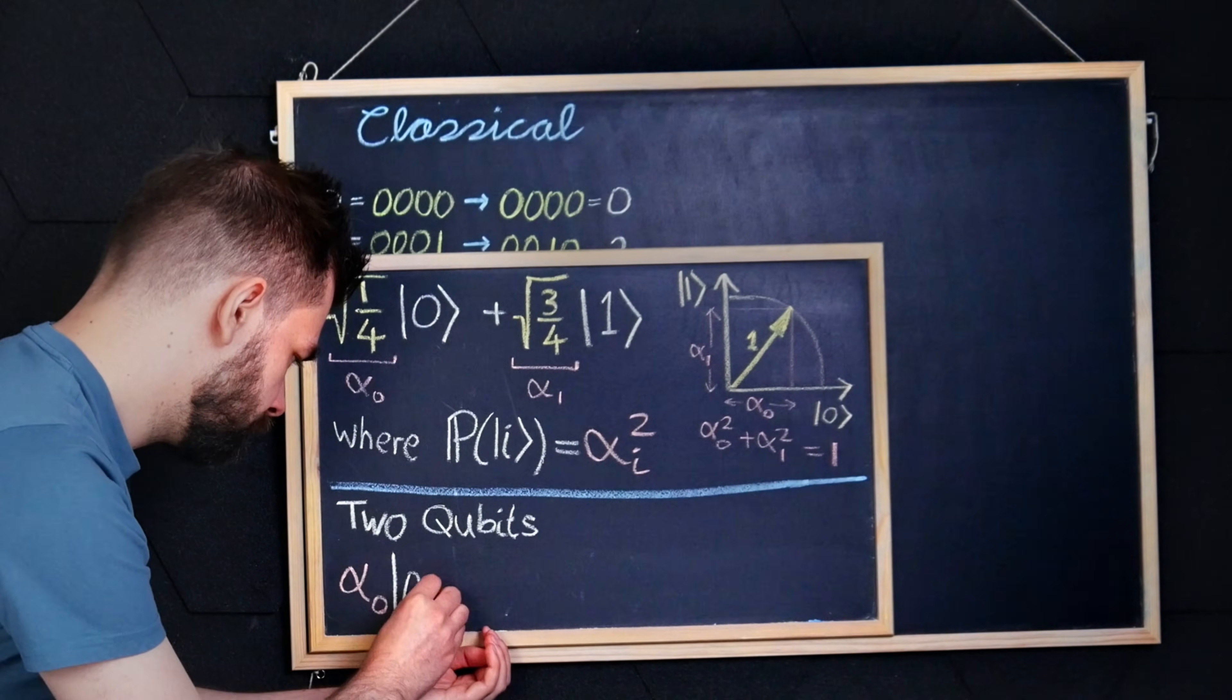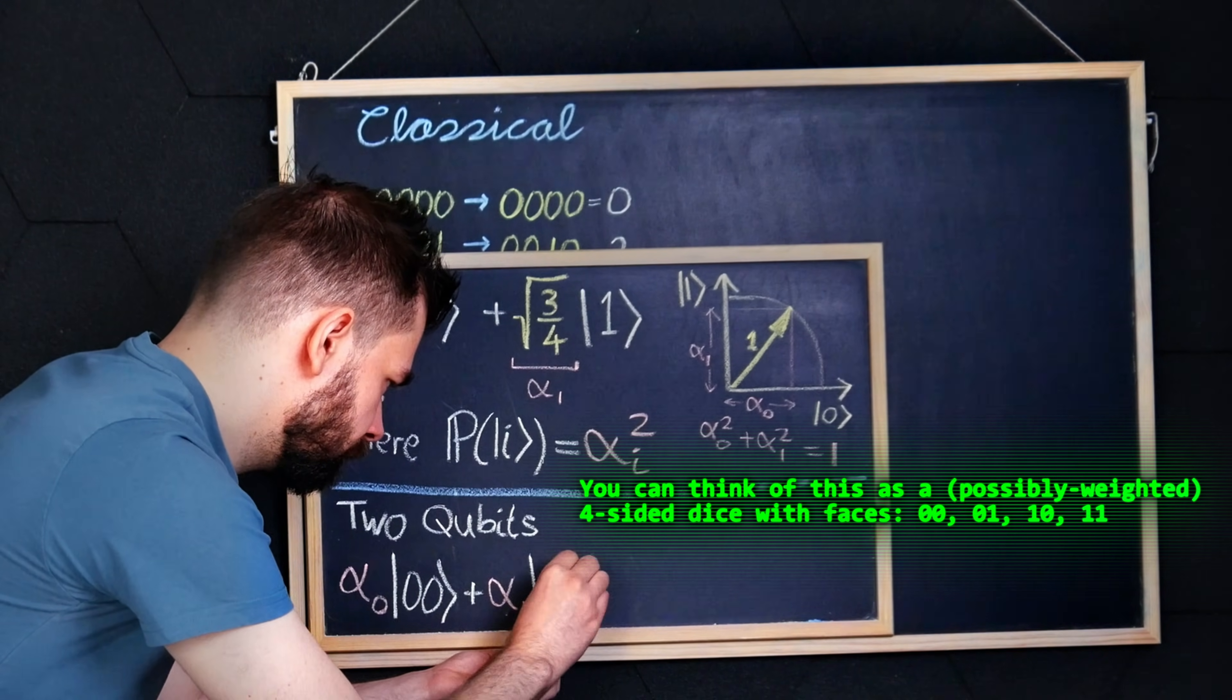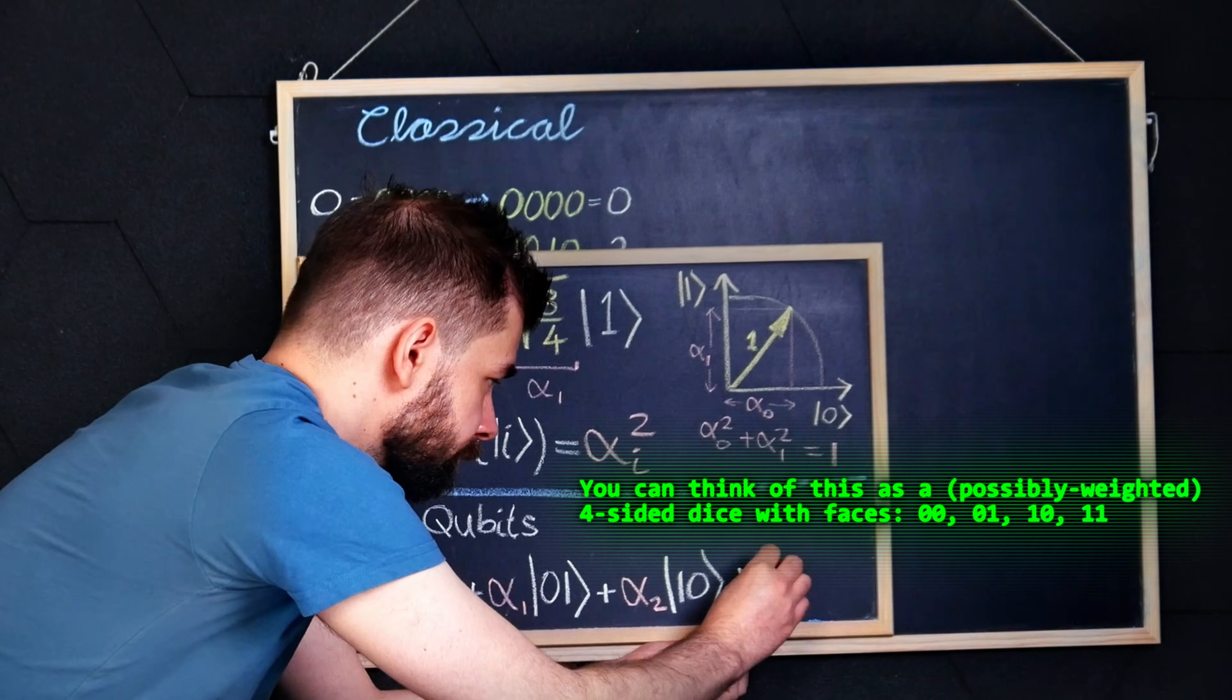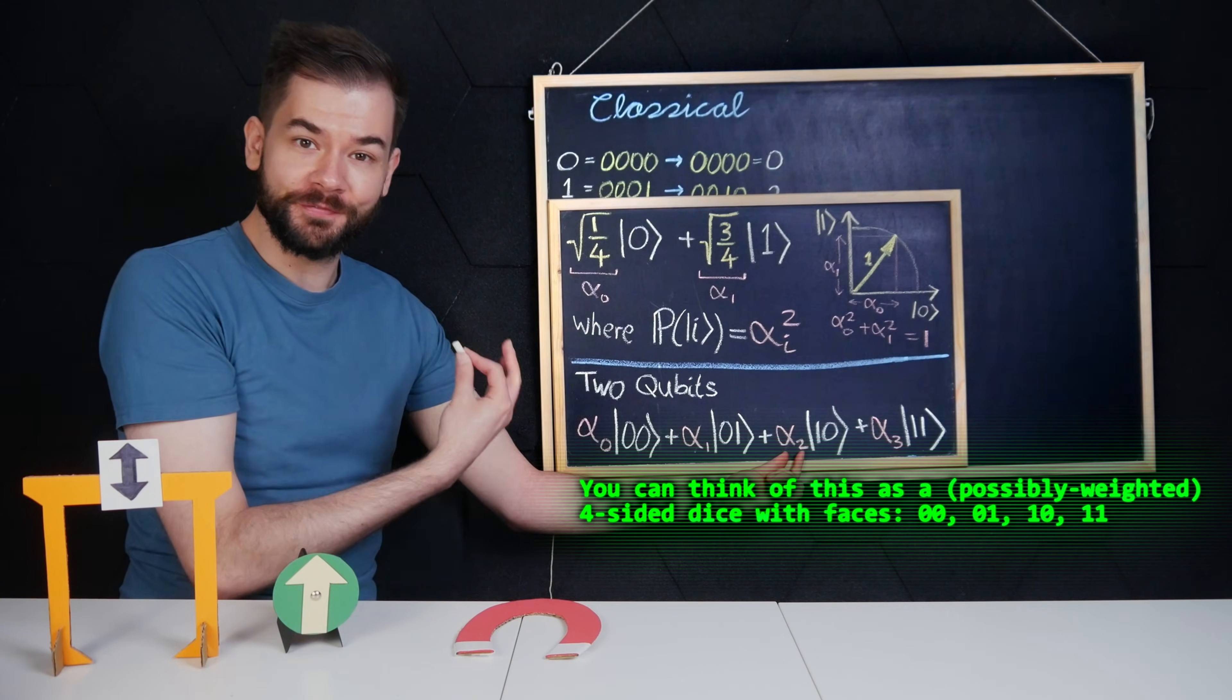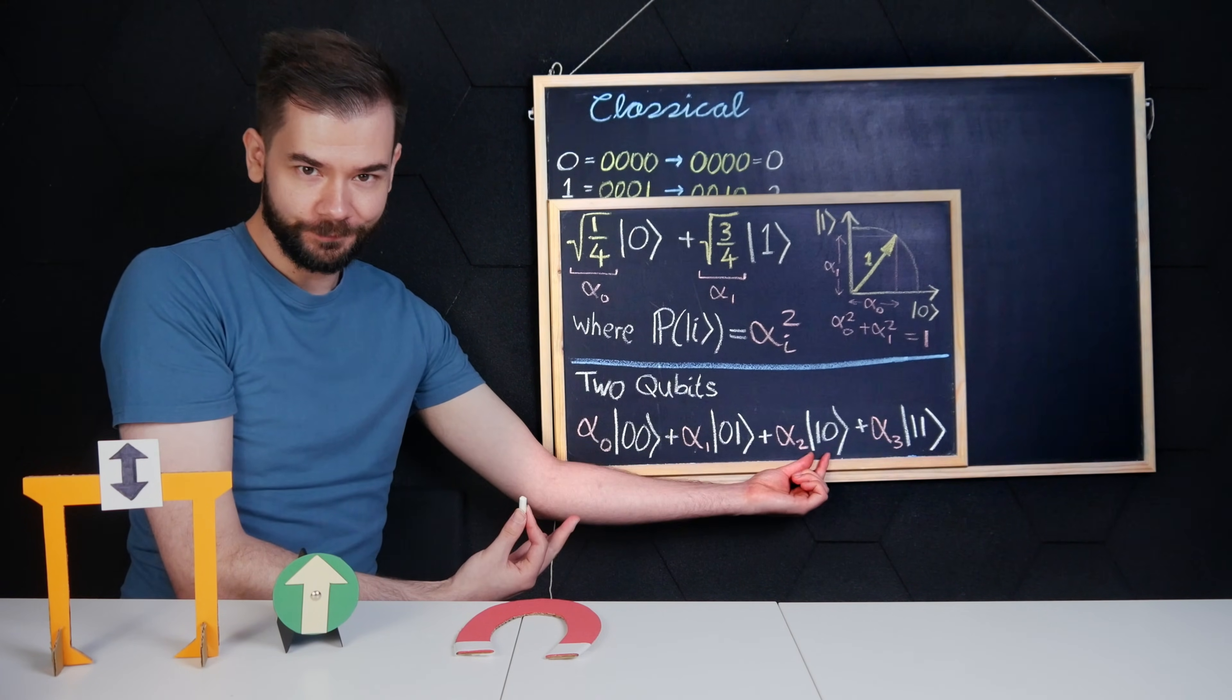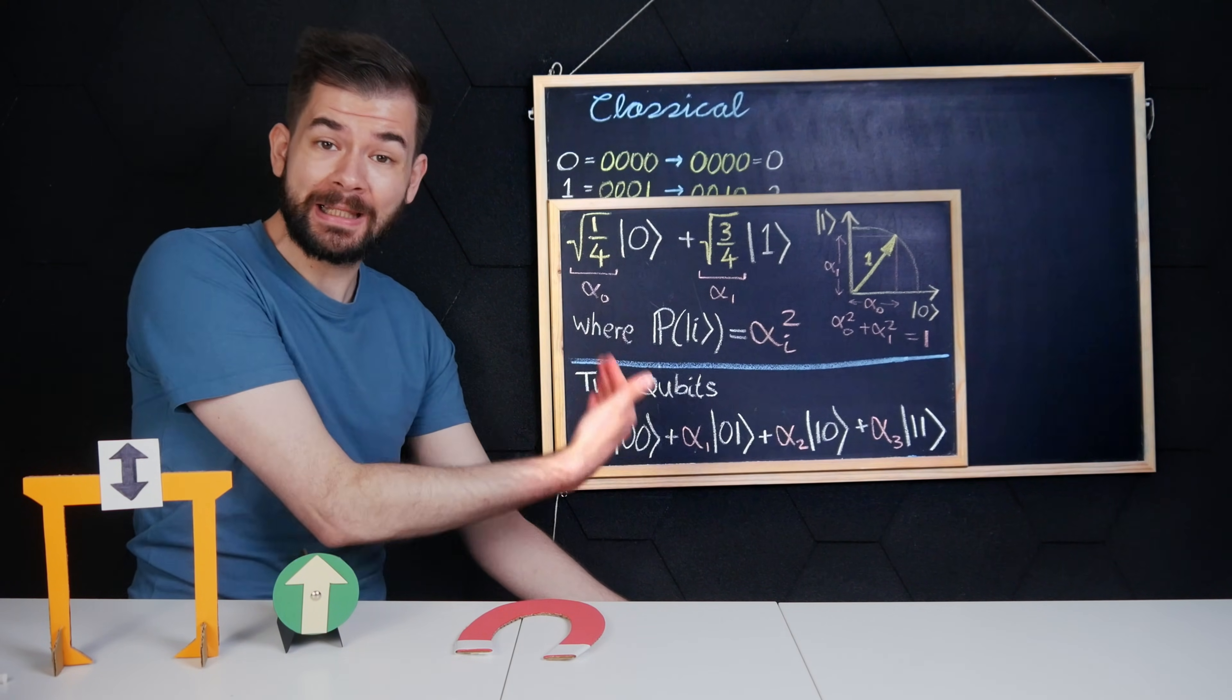With a two qubit system, there are four possible options, and we write the state as a linear combination of these. Where again, the square of the coefficient gives the probability of observing that outcome. And we can extend this to as many qubits as we like.